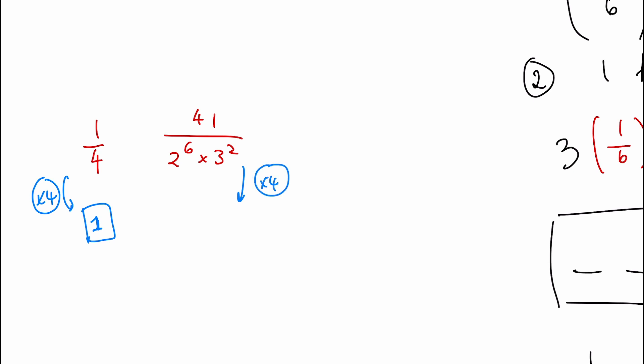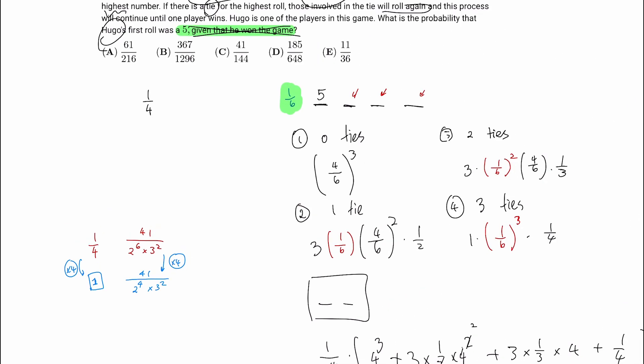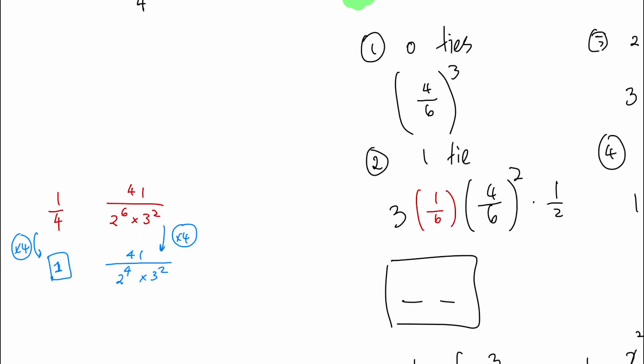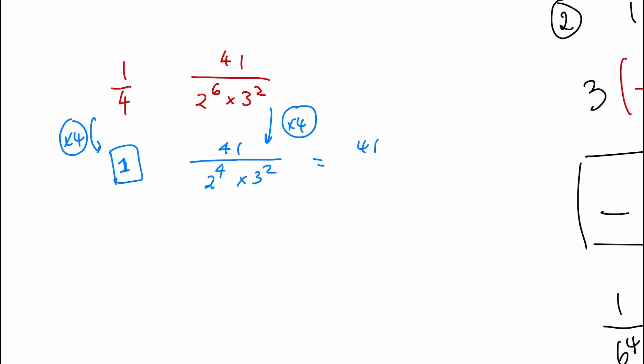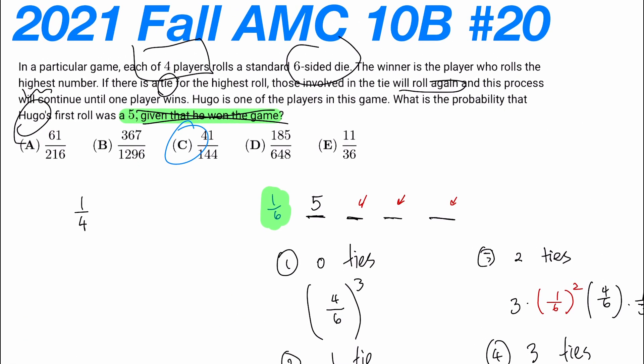So the probability of this also has to scale by the equal amount, and that will give us 41 divided by 2 to the 4 times 3 squared. And the only answer with 41 as a numerator is going to be C. But just to be sure, we can calculate it out. It's 16 times 9, which is exactly 144. So C, 41 over 144, is going to be our answer for this problem.